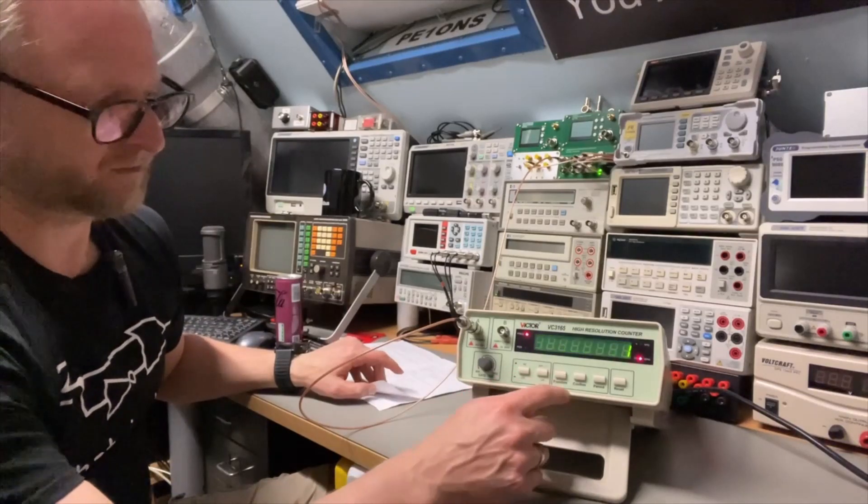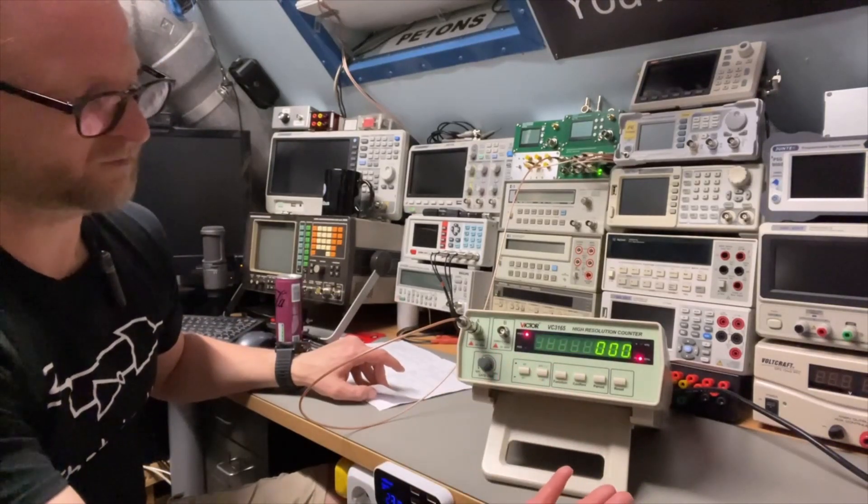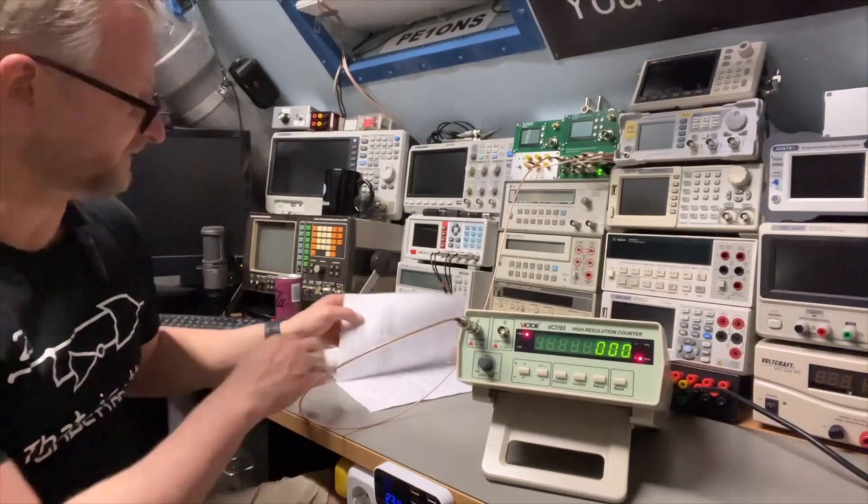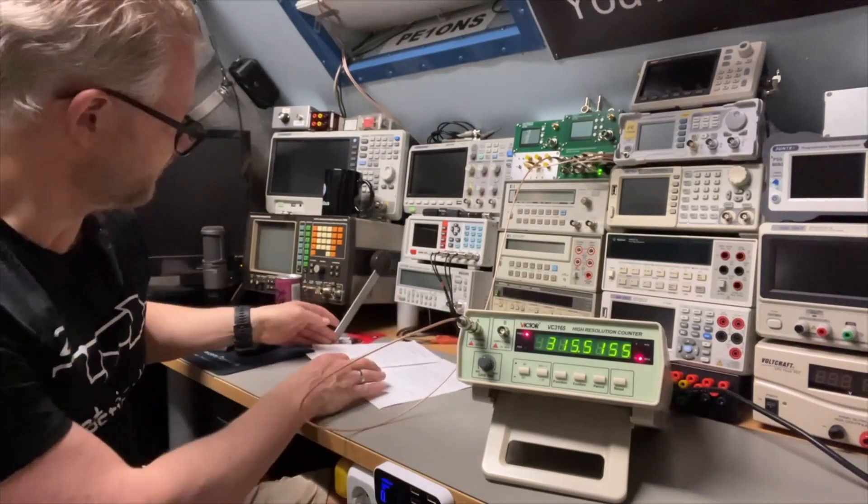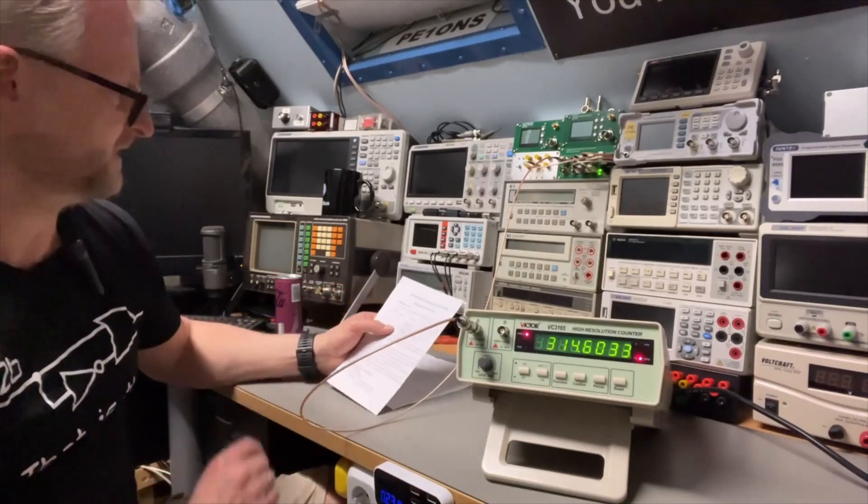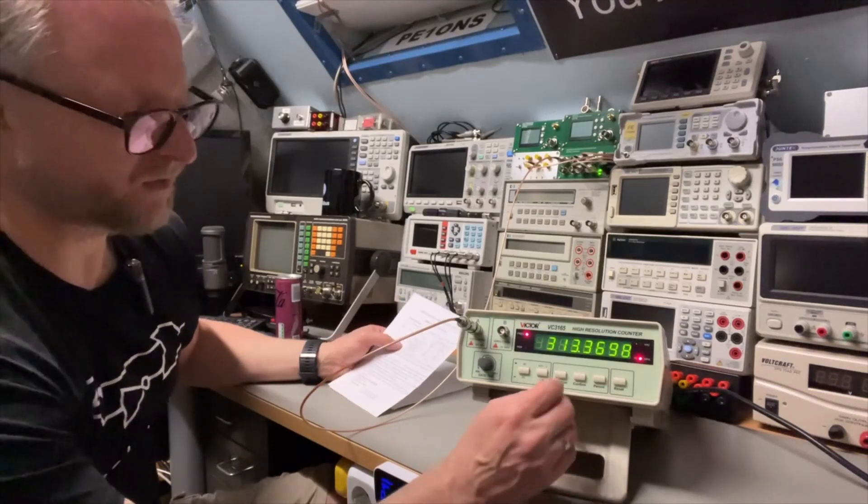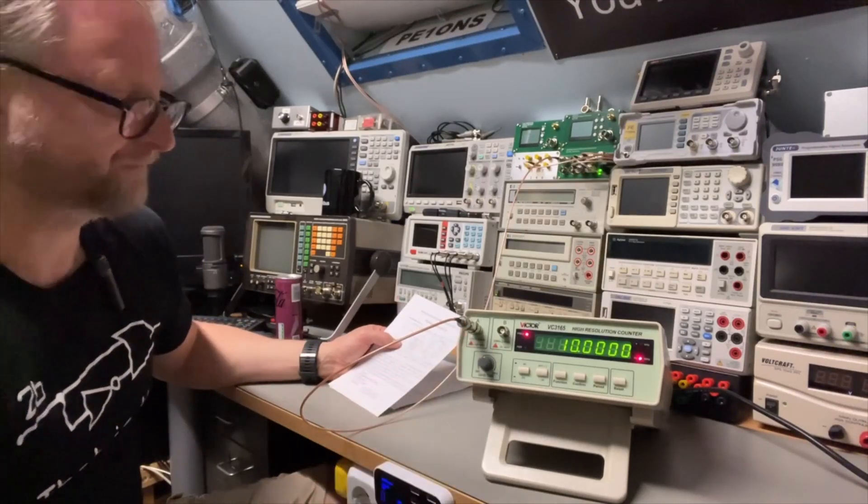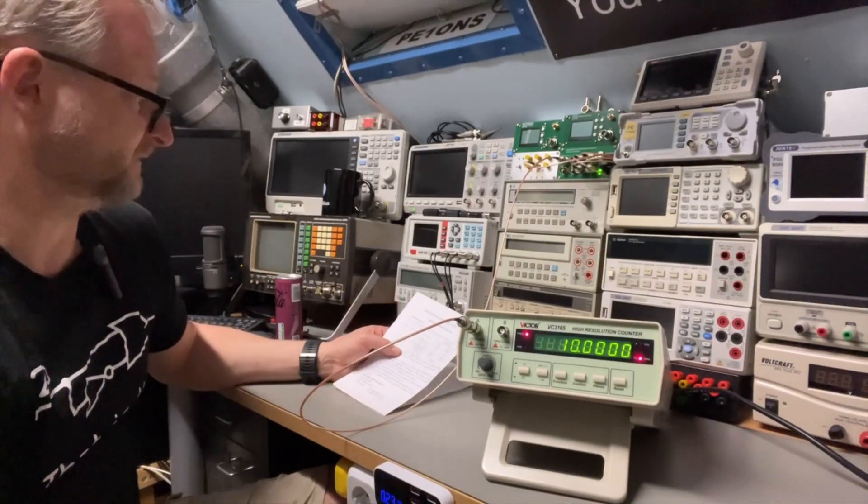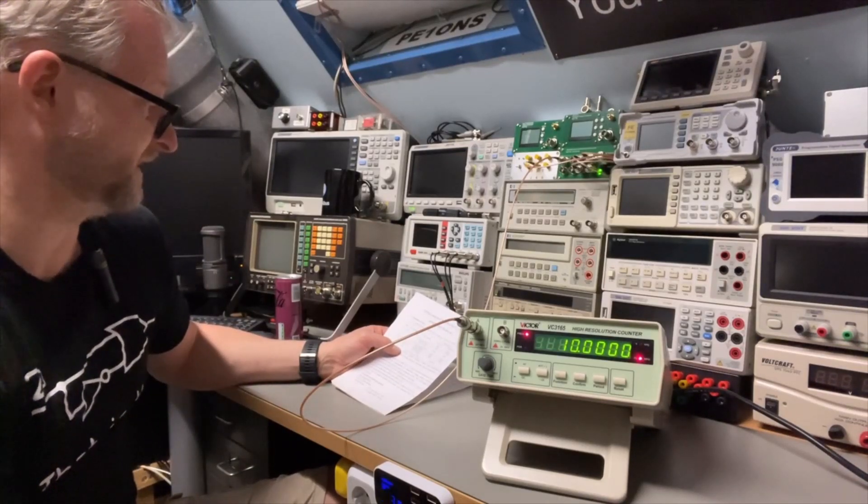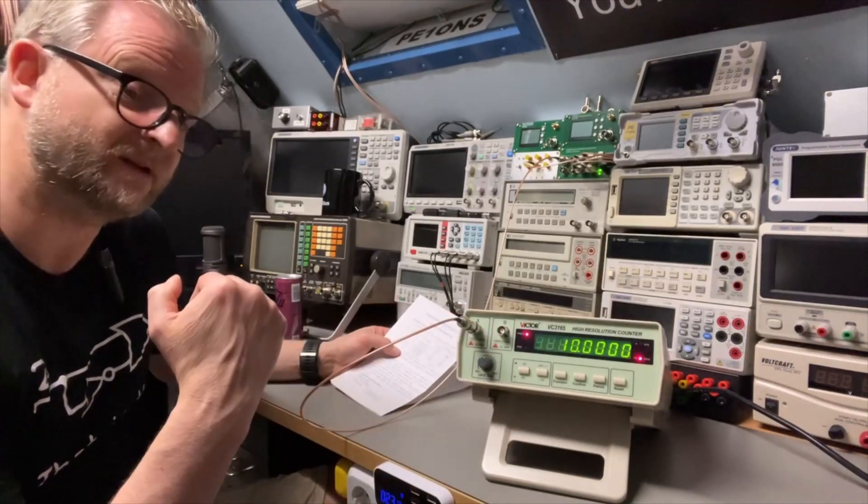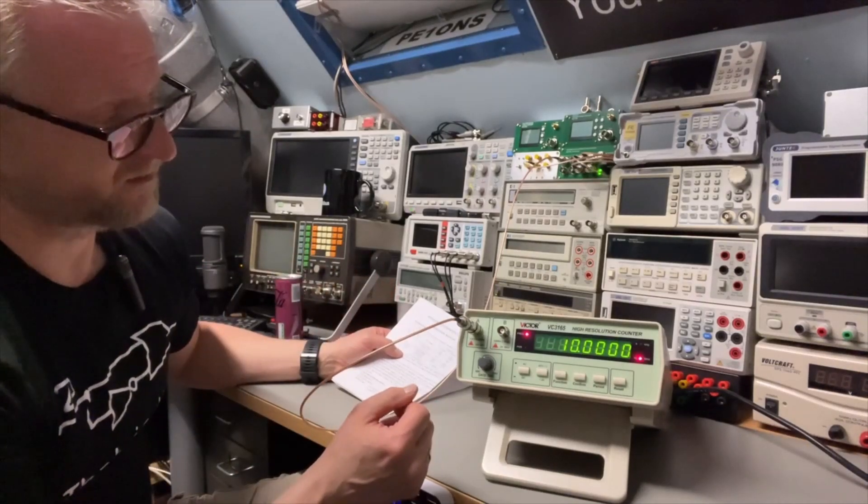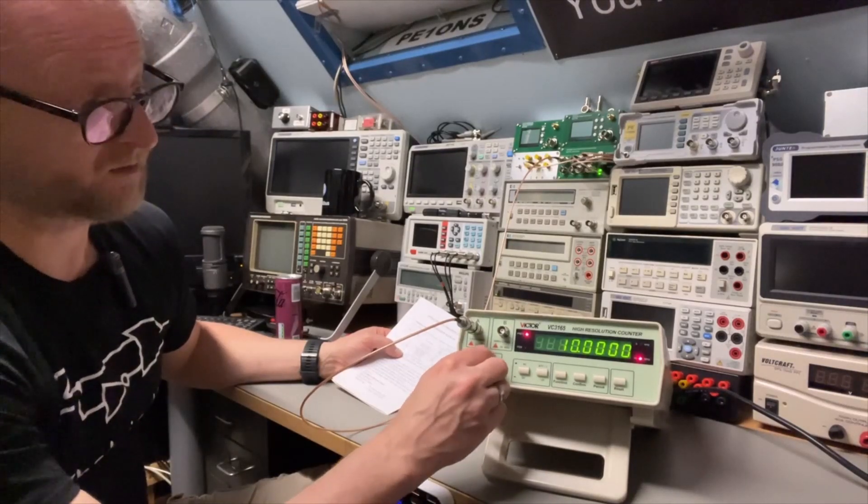So how do we get this A port working? I decided to do this with functions. Function one is the default for the high frequency port B. Then there is also a function two and function two works on the A port. There is also a function three and function three does the same but then they have a low pass filter and the higher frequencies are cut off above two megahertz.